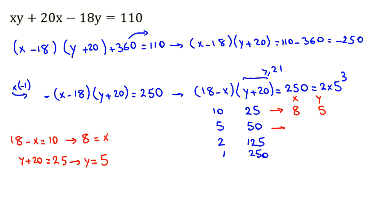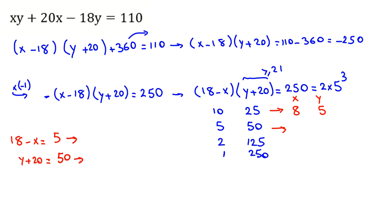For the next case: 18 minus x equals 5, and y plus 20 equals 50. Taking 20 to the right hand side, y equals 50 minus 20, which is 30. Taking x to the right hand side, x equals 18 minus 5, which is 13. So x equals 13 and y equals 30.